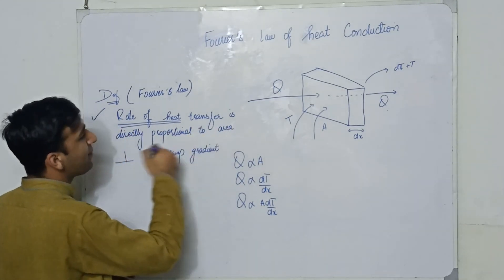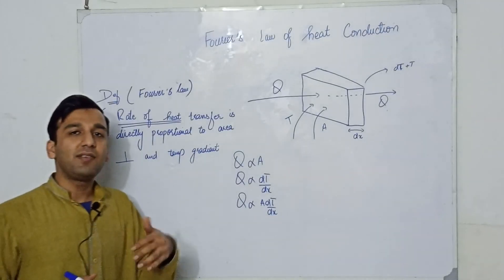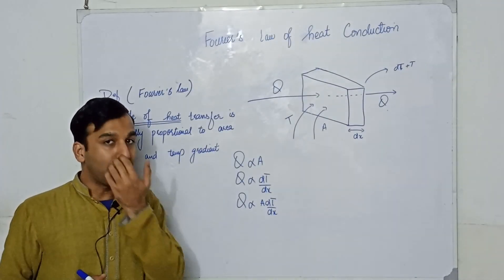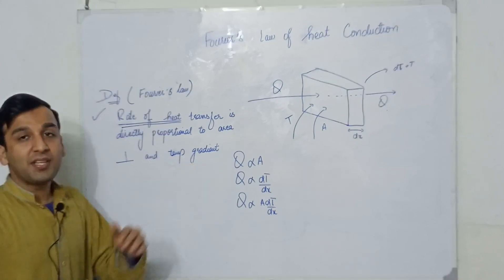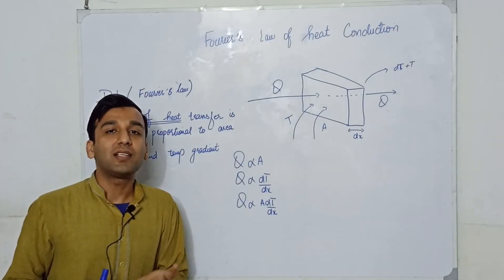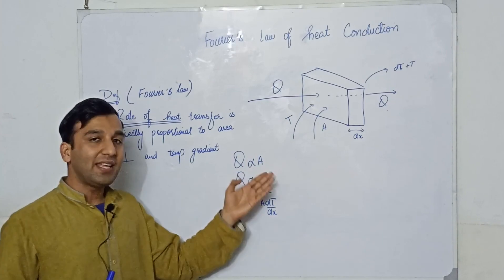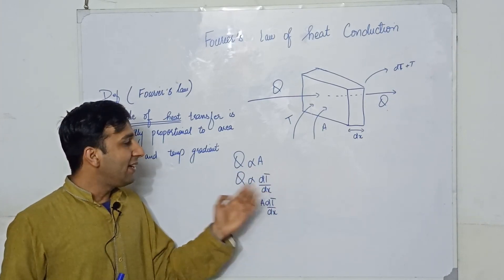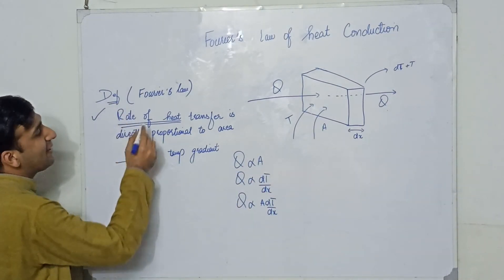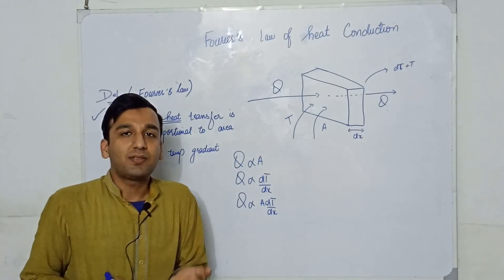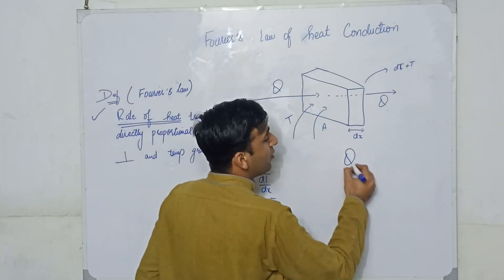First, we look at the definition, which states that the rate of heat transfer is directly proportional to the area held perpendicular to heat flow, and to the temperature gradient. So the rate of heat transfer is directly proportional to two things: area and temperature gradient.